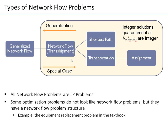Shortest path was a special case. If you go to the right in this chart, you get a special case of the model on the left. What was so special about shortest path? Instead of having multiple units shipped, we only had one unit of supply and one unit of demand. But everything else in the shortest path was the same as in a transshipment problem.